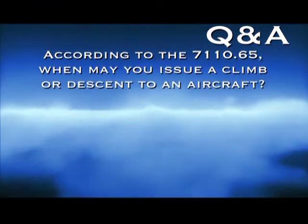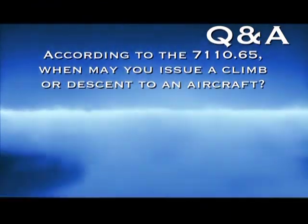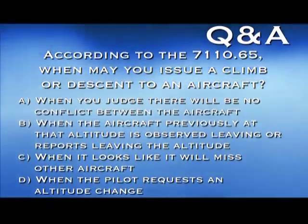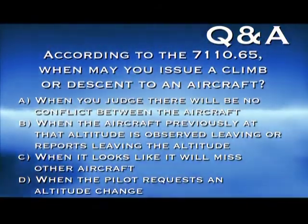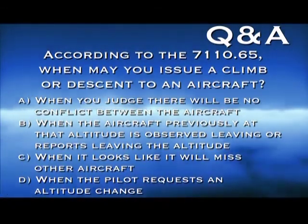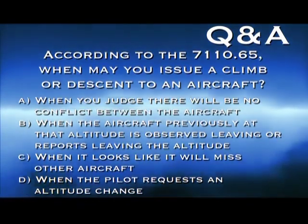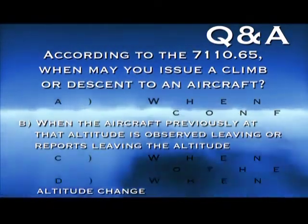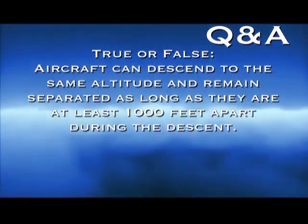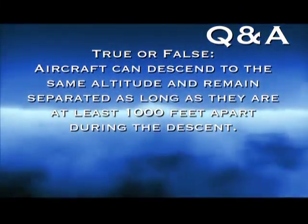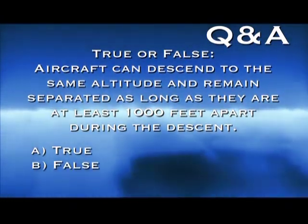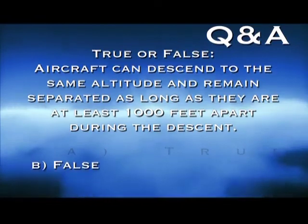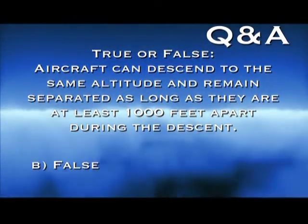According to the 7110.65, when may you issue a climb or descent to an aircraft? A, when you judge there will be no conflict between the aircraft. B, when the aircraft previously at that altitude is observed leaving or reports leaving the altitude. C, when it looks like it will miss other aircraft. D, when the pilot requests an altitude change. The correct answer is B. True or false: aircraft can descend to the same altitude and remain separated as long as they are at least 1,000 feet apart during the descent. The answer is false. Vertical separation does not exist during a descent; it only applies to the final altitudes of the two aircraft.